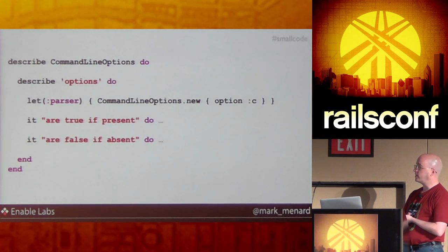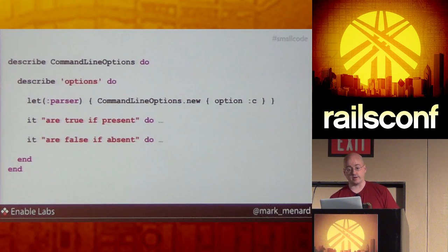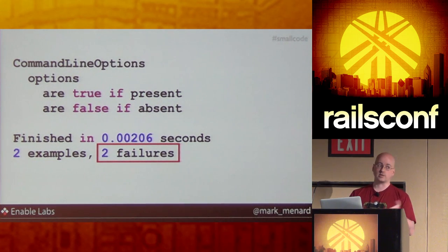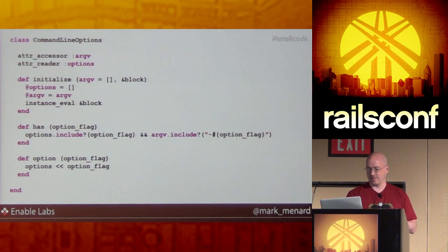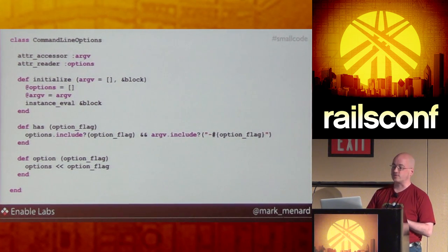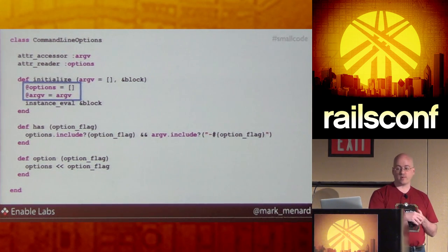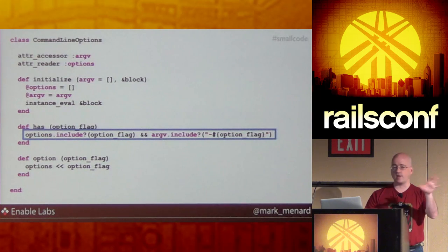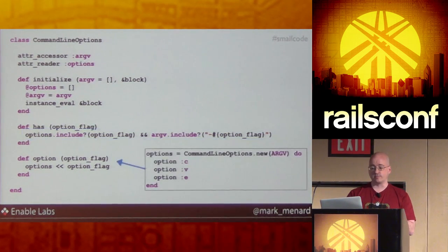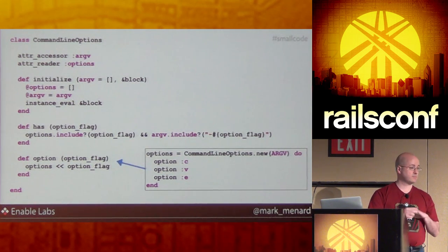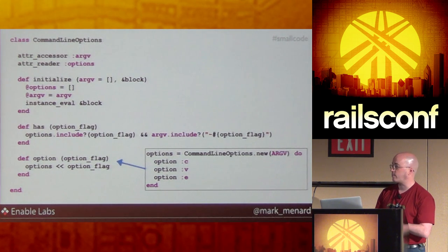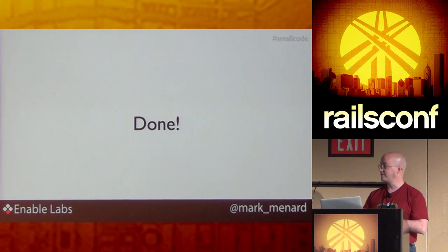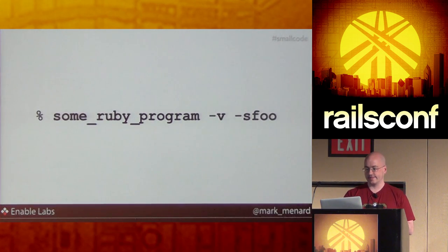Here's my spec. It's pretty simple — it's true if the option's defined and present on the command line, and false if it's not. I run my specs and get two failures. Yes, I used TDD. Here's my implementation that fits on one slide. I store the defined options in an array and store the arguments — the argv — for later reference. I have a 'has' method that checks if the option's defined and present in the argv, and an option method that implements my simple DSL. Nice and readable, fits on one slide, probably very comprehensible. I run my tests, zero failures — they pass. I'm done. I get to go home until the future comes along.